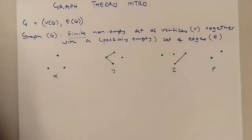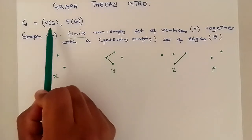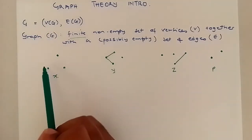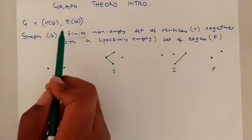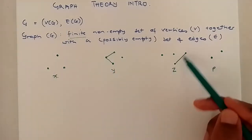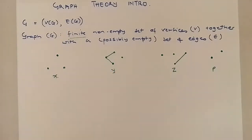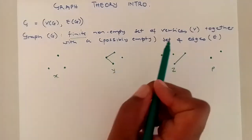A graph is a finite non-empty set of vertices together with a possibly empty set of edges. So in graph theory, a graph consists of vertices — these dots you are seeing right here — and edges. Edges are these lines that join the vertices. So it is a finite non-empty set of vertices.